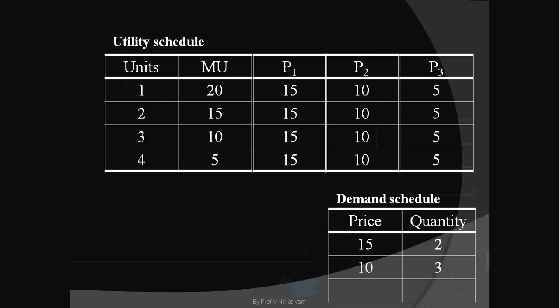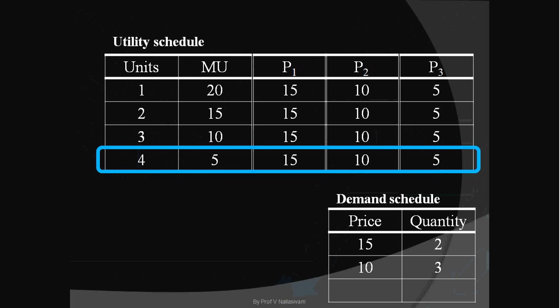Let us assume the price falls to 5 rupees. Once again there is a disturbance in the consumer's equilibrium — his marginal utility is 10 whereas his price is 5 rupees. He has to establish equilibrium by consuming one more unit. He consumes the fourth unit, reduces the marginal utility, and equates marginal utility with price. It means he buys 4 units at 5 rupees price. This is shown in the demand schedule.